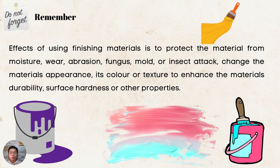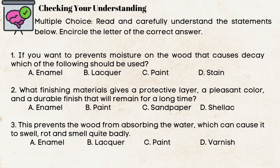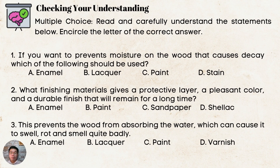Before we end this video, let us have a brain check or knowledge check — multiple choice. Read and carefully understand the statements below. Encircle the letter of the correct answer. Number one: if you want to prevent moisture on the wood that causes decay, which of the following should be used? A. Enamel, B. Lacquer, C. Paint, D. Stain.